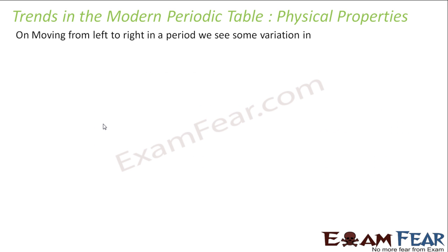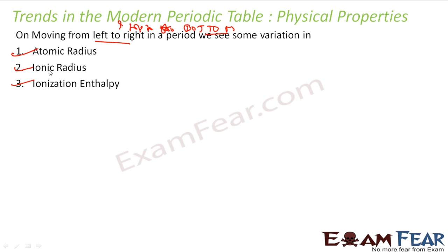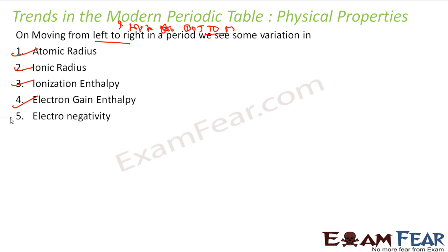So let's talk about the trends in physical properties. As you move from left to right and also top to bottom, we see some variations. We'll study the variations in atomic radius, ionic radius, ionization enthalpy, electron gain enthalpy, and also electronegativity.